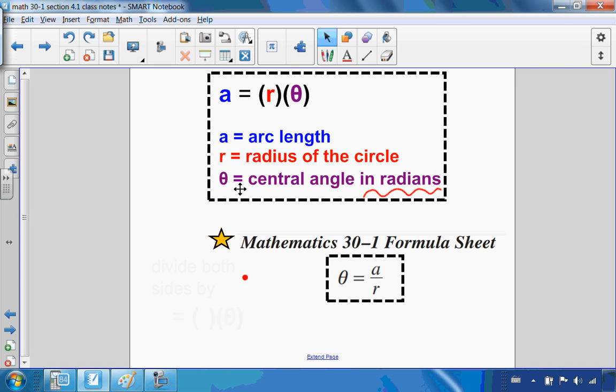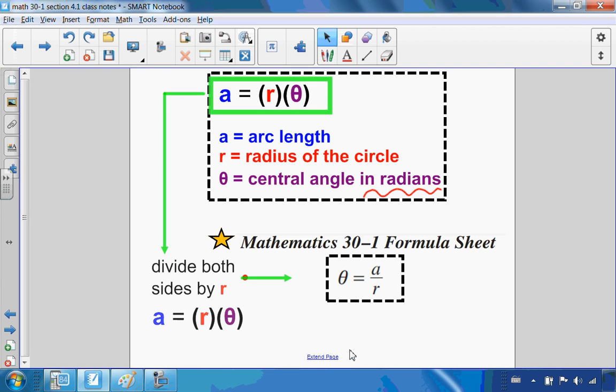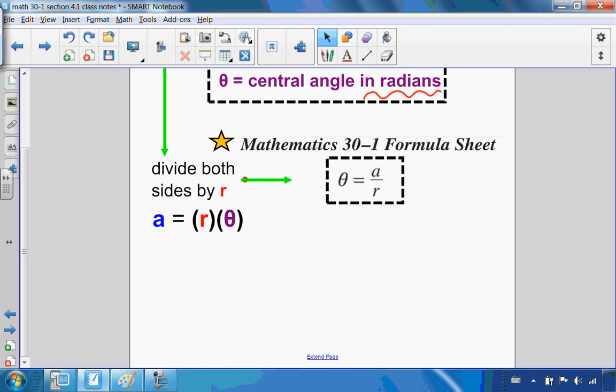Let's talk about how to go from the formula we just derived to their formula. All I have to do to get theta by itself is divide both sides by r. Arc length over radius equals theta, and that is the formula that they use. Since that formula is on the formula sheet, we'll use that formula, but I wanted to show you where it came from.